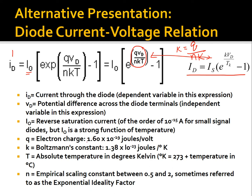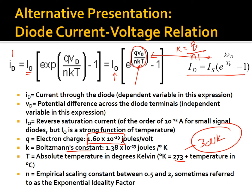In this equation, q is the electronic charge, typically 1.6 × 10⁻¹⁹ C. The constant k here is the Boltzmann constant, approximately 1.38 × 10⁻²³ J/K. T is the temperature, and for room temperature we use 300 K — remember to convert from Celsius to Kelvin by adding 273. I₀ is the reverse saturation current, and n is the empirical ideality factor, with a typical value between 0.5 and 2; we usually take n = 1.